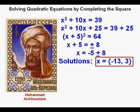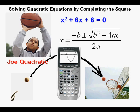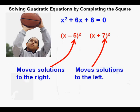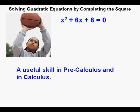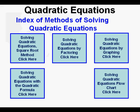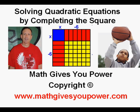Let's take a look at some of the advantages of completing the square. First, learning to complete the square helps with understanding conics later in algebra 2. We can see that x minus binomials move solutions to the right and x plus binomials move solutions to the left. Also, the skill of completing the square is very useful in pre-calculus and in calculus. Here are the five different methods of solving quadratic equations covered in this series: the square root method, solving by factoring, solving by graphing, using the quadratic formula, and completing the square. You may click on any of these to go to that particular lesson. There is also a solving quadratic equations flow chart that filters you through the different techniques. This has been solving quadratic equations by completing the square — thanks for viewing.